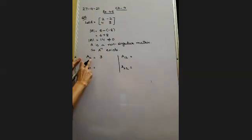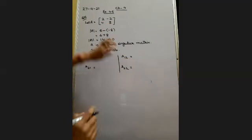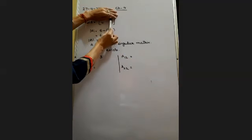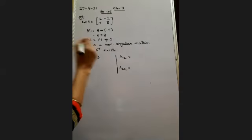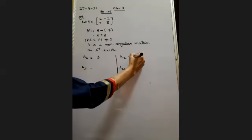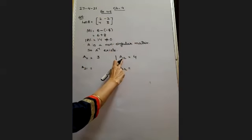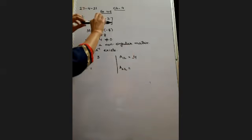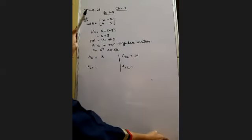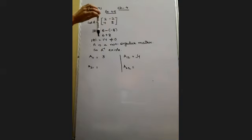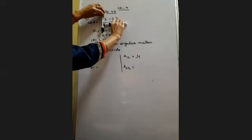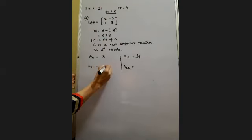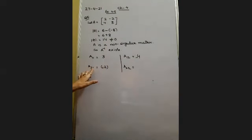The sum of row and column indices for A11 is even, so there is no change in sign. For A12, first row and second column — delete those, the element left is 4. The sum of row and column is odd, so the sign will be changed. A21: delete second row and first column, we are left with minus 2. Again, sum of row and column is odd, so sign changes.